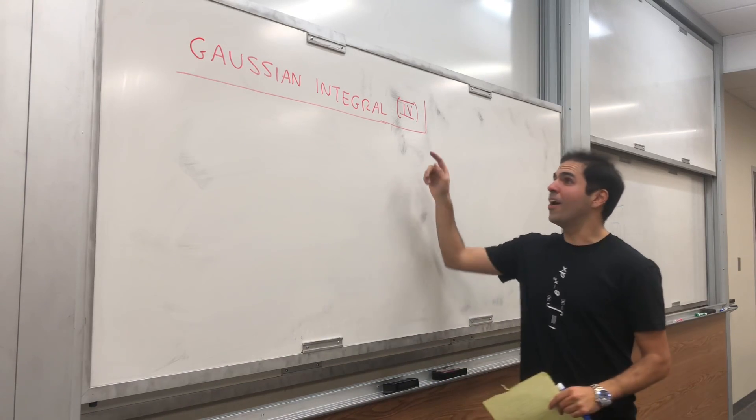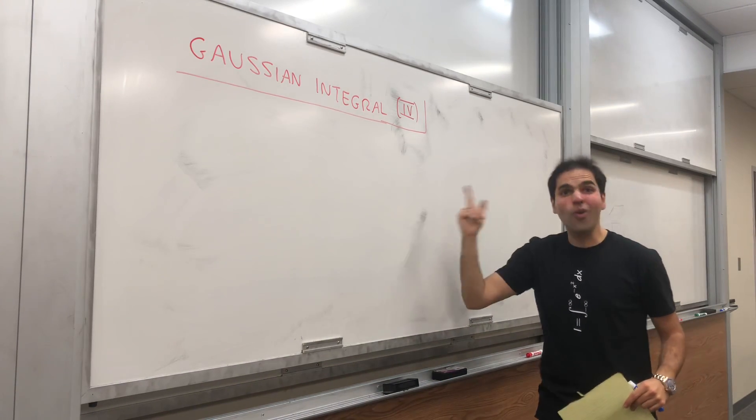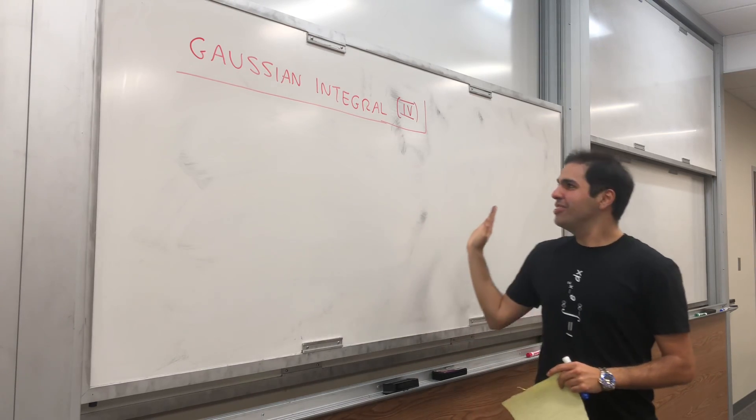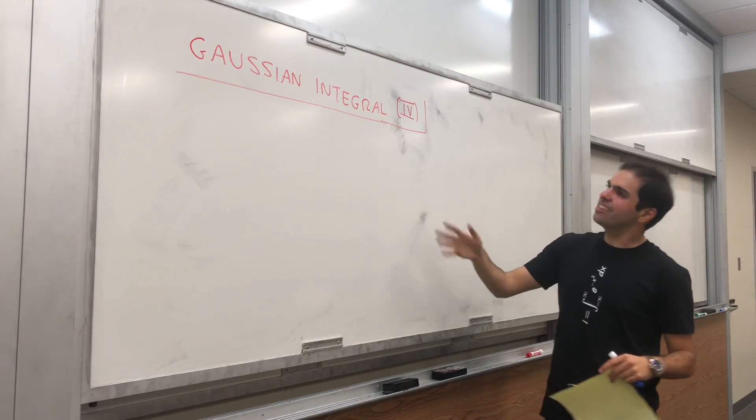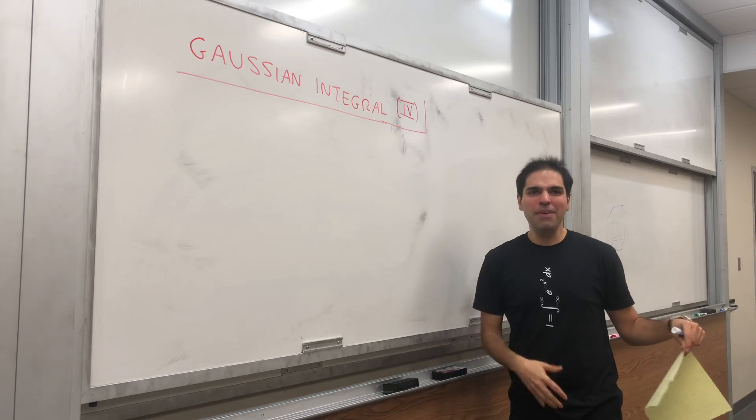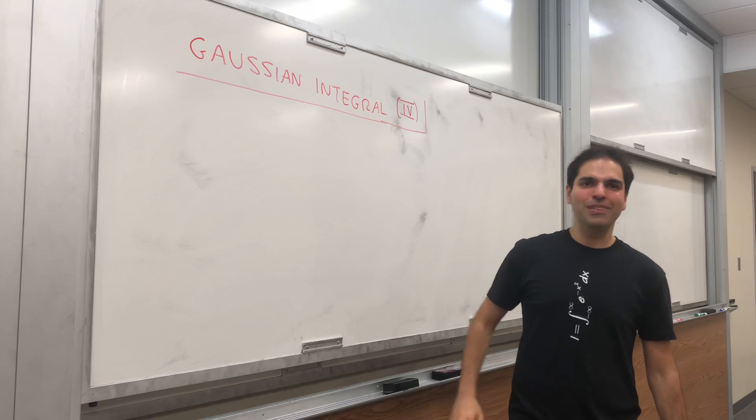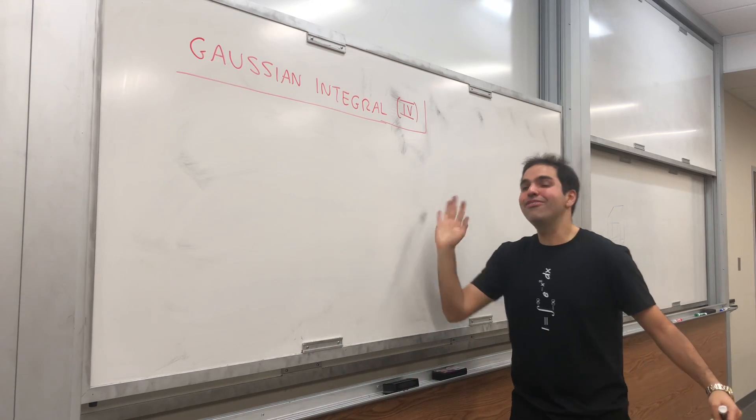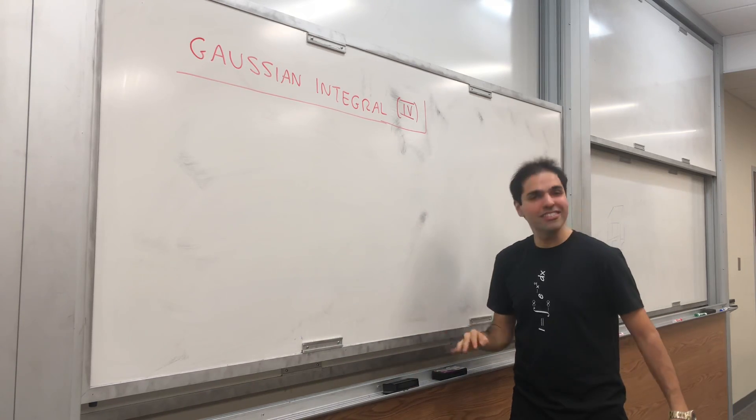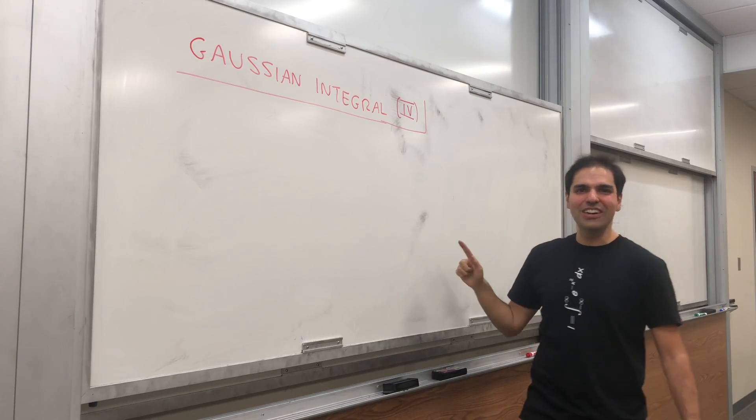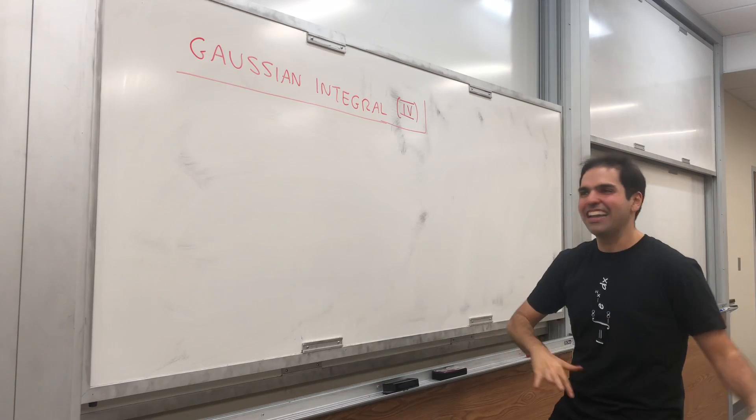Alright, thanks for watching and welcome to our fourth way of calculating the Gaussian integral. Today I would like to call it the Feynman way because it's very similar to the Feynman technique. I mean, I don't know actually what the Feynman technique is. I'm not a physicist, but still, surely you must be joking, Dr. Feynman.